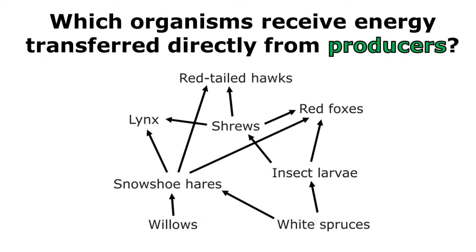This question asks: which organisms receive energy transferred directly from producers? That means there would be an arrow from producers to these organisms. The willows and white spruces are my producers, and I can see arrows pointing directly from them to the snowshoe hares. There's also an arrow pointing directly from the white spruces to insect larva. So the snowshoe hares and the insect larva are getting energy directly from producers.